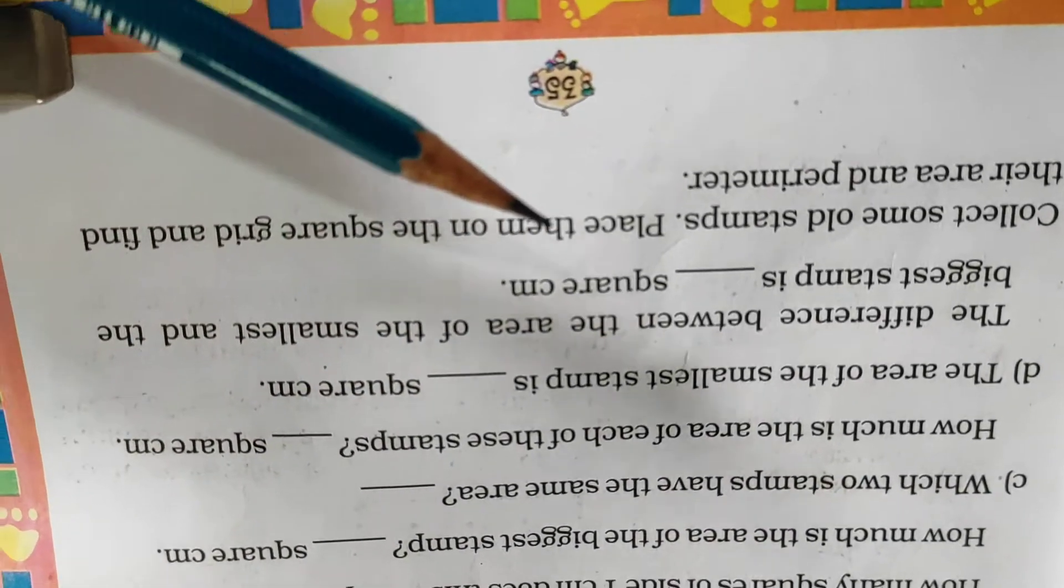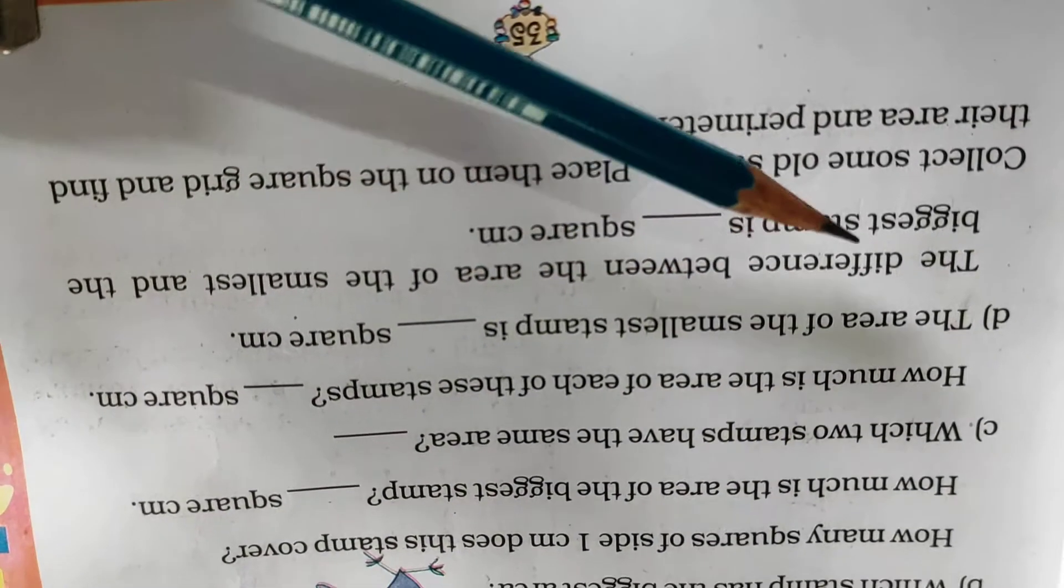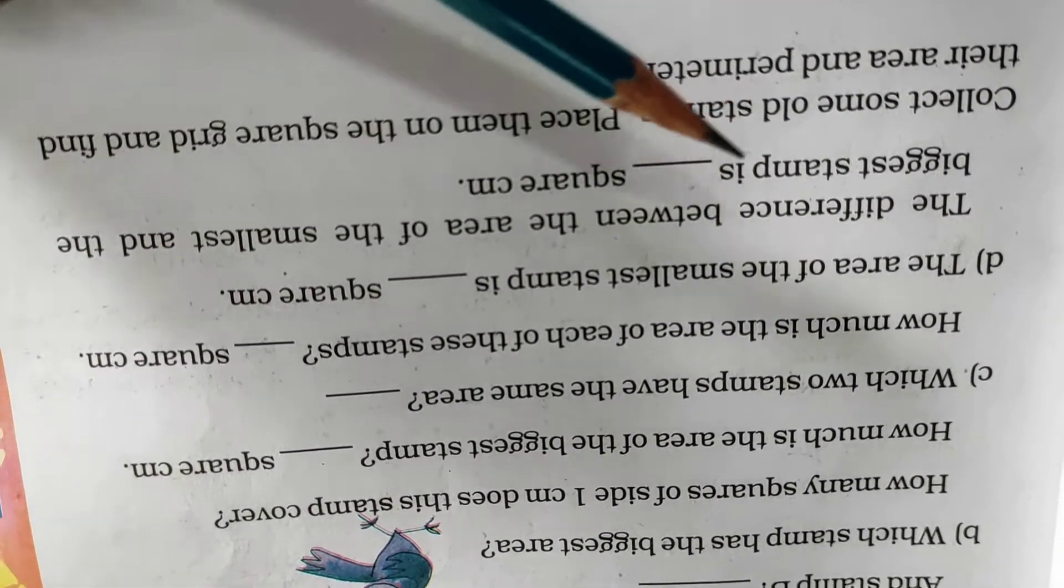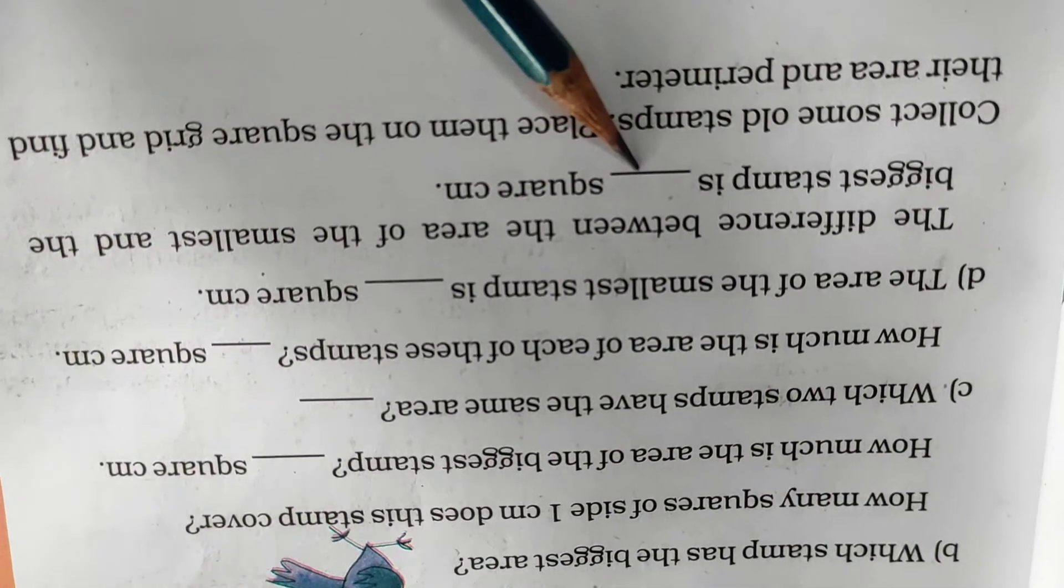Then the difference between the area of the smallest and the biggest. So biggest is 18, smallest is 4. So 18 minus 4 is 14 square cm.